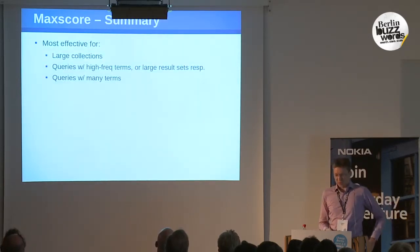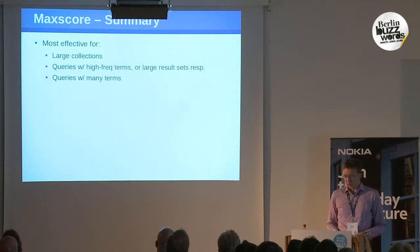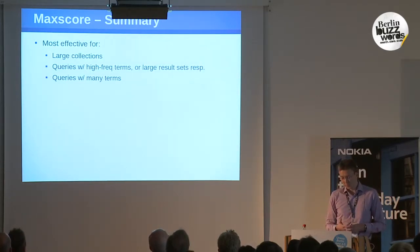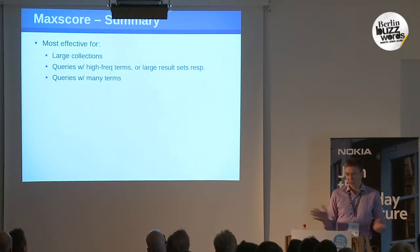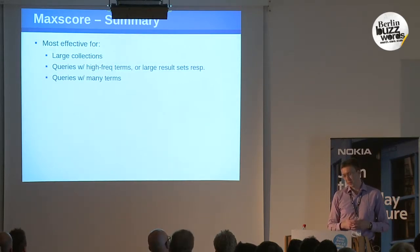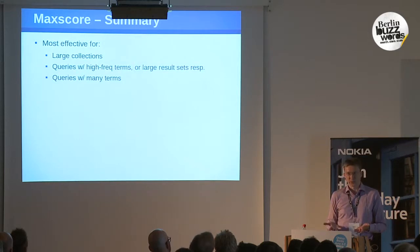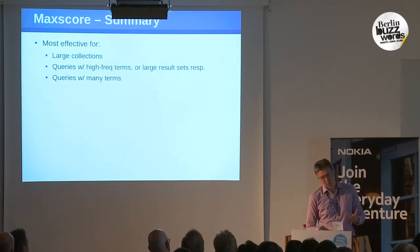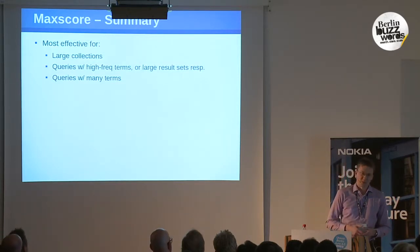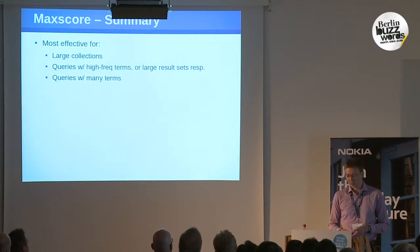Max Score is most effective for large collections — with even more documents the speed-ups get bigger. It's effective for queries containing high-frequency terms, and more generally for queries with large result sets, which can also speed up conjunctive queries. And if you have queries with many terms, you're very likely to have one of those annoying stop words in there.